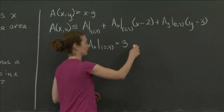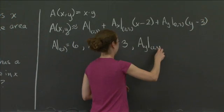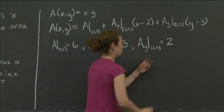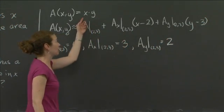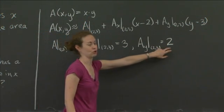In a similar vein, we can immediately look and see that A sub y evaluated at 2,3 is going to be 2. And the reason for that, of course, is if we look back here, the derivative of A with respect to y is x. So evaluating it at 2,3 gives us 2.